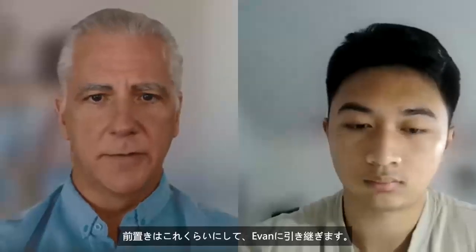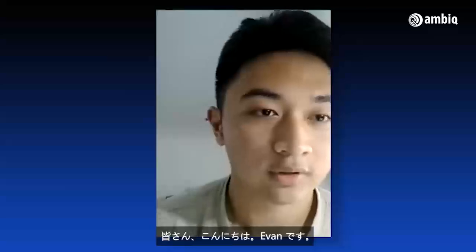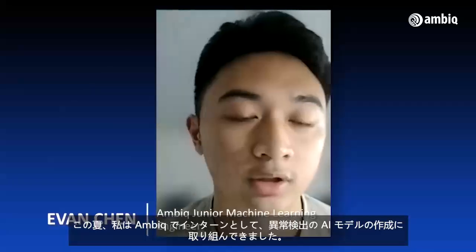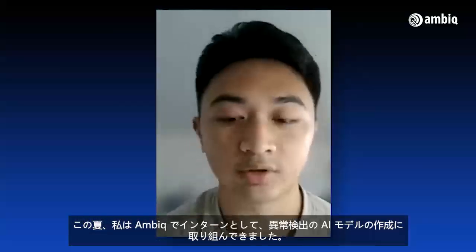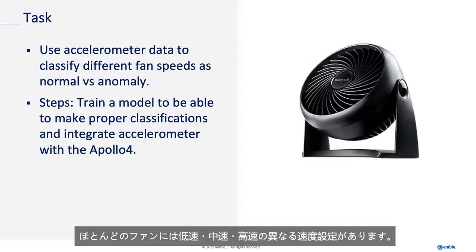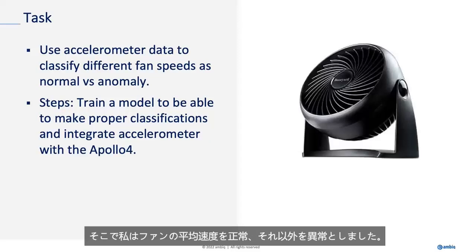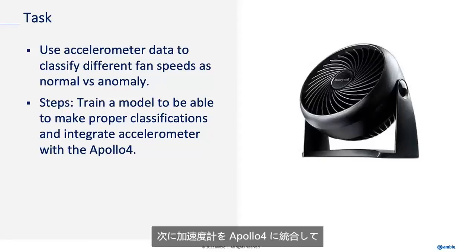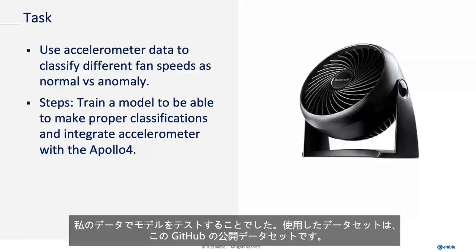Without further ado, I'll turn it over to Evan. Hey, everyone. I'm Evan. I have been an intern here at AMBIC over this past summer, and I have been working on creating an AI model to detect anomalies. Specifically, my AI model uses accelerometer data to classify different fan speeds as normal versus anomaly. Most fans have different speed settings — low, medium, high — so I considered the lowest speed as normal and everything else as an anomaly. The steps were to train a model to make the proper classifications and then integrate the accelerometer with the Apollo 4 to test my model on live data.